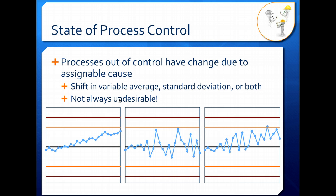As we've said, processes out of control have changes due to assignable causes, and so this is either a shift in your variable average—as you can see here, our average is gradually increasing—it can be a shift in your standard deviation, which means your points get more spread out on your graph as we see here, or it can be both.